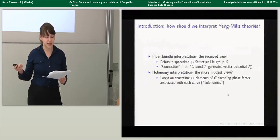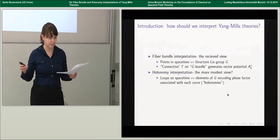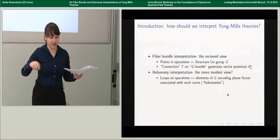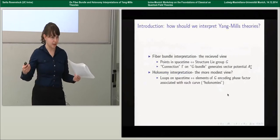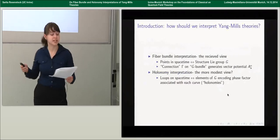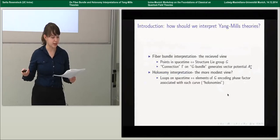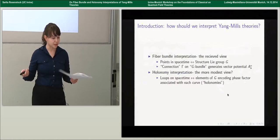At first glance it's easy to understand why the fiber bundle interpretation seems to have more stuff, because we have to associate a Lie group with every point on spacetime. But if it turns out that all of this extra structure can be uniquely and naturally derived from a holonomy model of the theory, then this criticism of the fiber bundle interpretation would lose its force. That's what I'm going to argue.